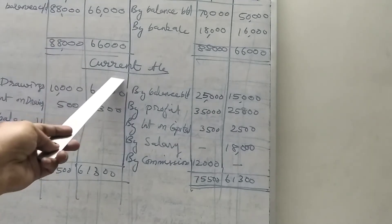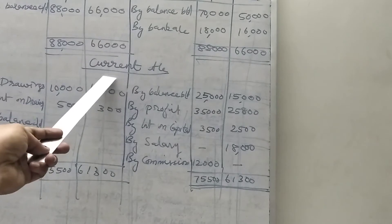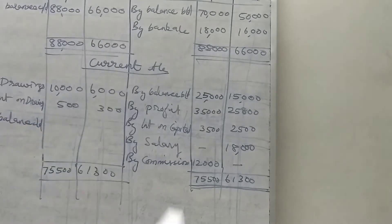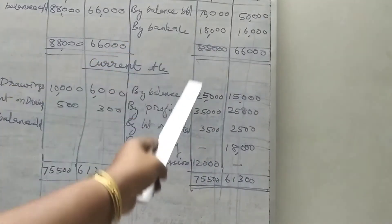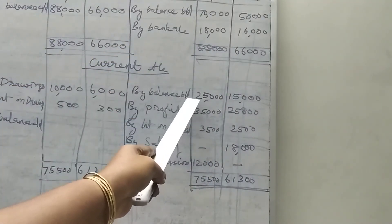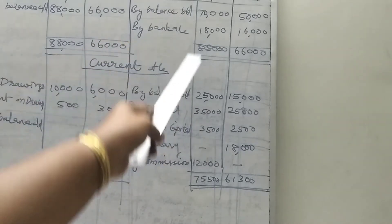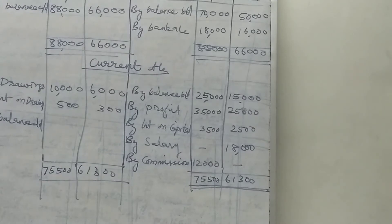Next is the current account. We start with the opening balance. Current account balance as of 1st April 2018: Ruben 25,000 and Derry 15,000. The capital account balance carries a credit balance, since all liabilities carry a credit balance. So these opening balances go on the credit side.